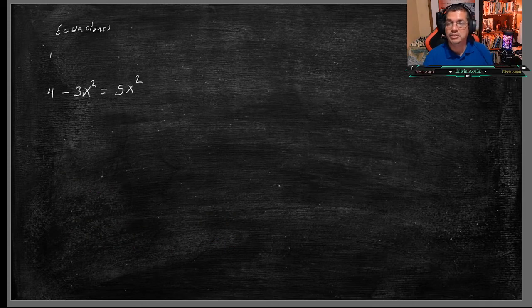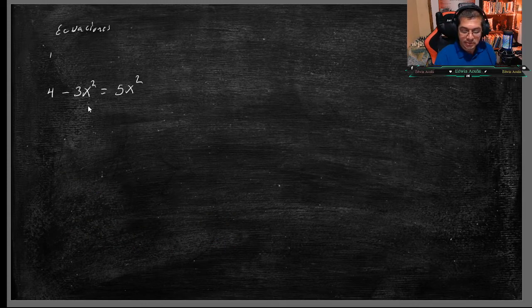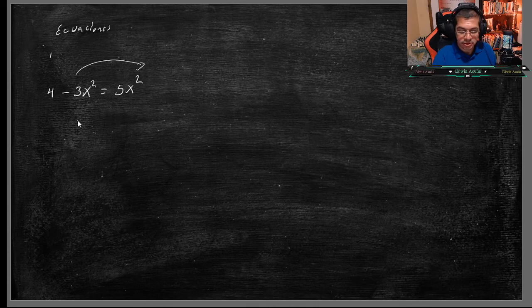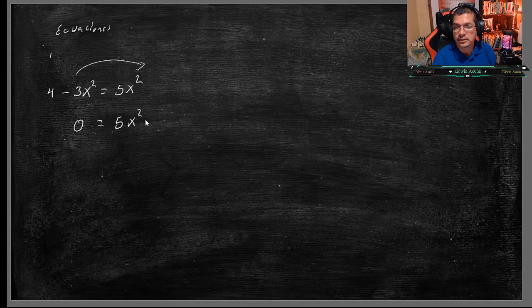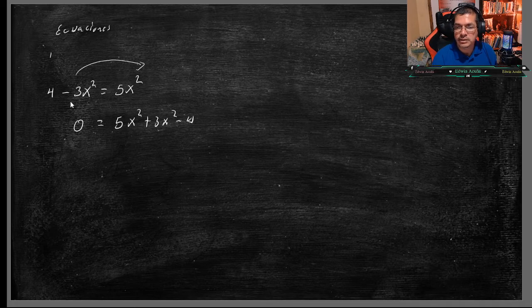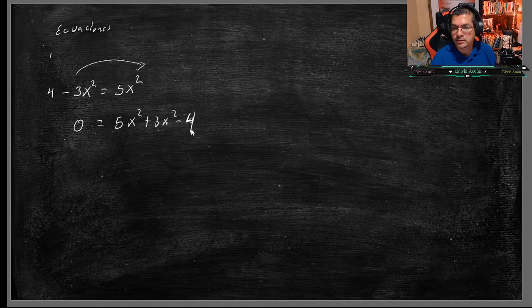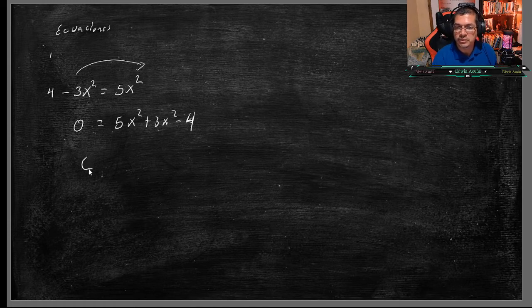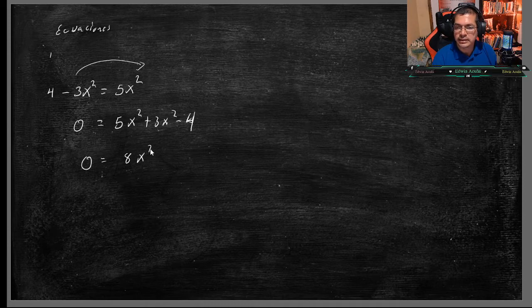Aquí tenemos otra cuadrática. La igualamos también. A mí me gusta que quede la X positiva, entonces lo paso por acá. El 0 puede ser a la izquierda o a la derecha. Más 3X2, menos 4. Está sumando, está restando, pasa a sumar, está sumando, pasa a restar, menos 4. Sumo y resto los semejantes. 0 es igual a 8X a la 2, menos 4.